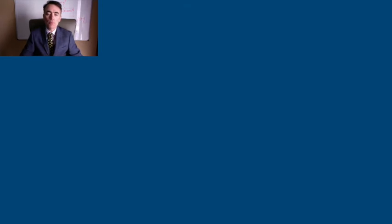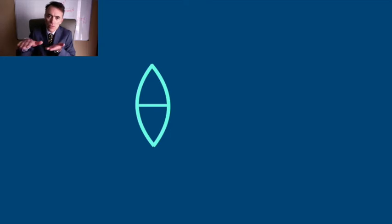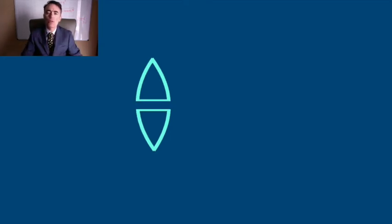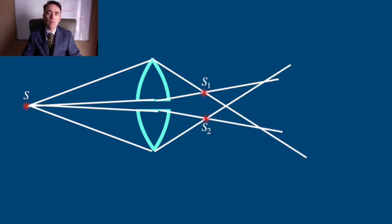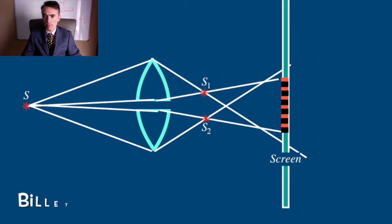We can also obtain two point images out of a point light source by using a convex lens cut in two diametrically and separating them slightly perpendicular to the optics axis. Here we would have two real images S1 and S2 obtained from a single point source S. This is Billet's split lens.